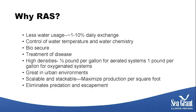RAS systems work great in urban environments because they're scalable and stackable, really maximizing production per square foot. When you grow fish in a pond, it's really the acreage of pond — that's all you can do. So RAS systems in an urban environment are very, very good for producing a large amount of fish. And because the environment is controlled, you get rid of predation and escapement of fish, eliminating aquatic invasive species issues and predation from wild animals.